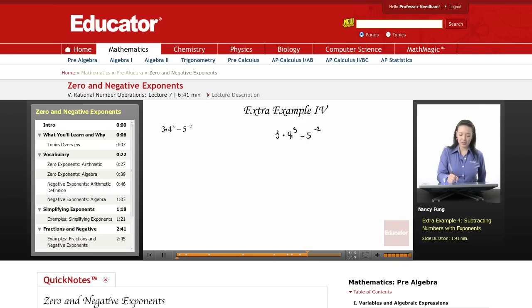So I'm going to work with my exponents first. 4 to the 3rd, that is 4 times 4 times 4. 4 times 4 is 16, and 16 times 4, 4 times 6 is 24, 4 and 5, 4, 5 and 6, so 64. So I'm going to have 3 times 64.